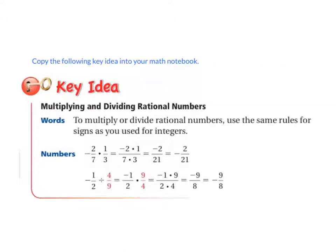Copy the following key idea into your math notebook. Today's key idea is multiplying and dividing rational numbers. To multiply or divide rational numbers, use the same rules for signs as you used for integers. So if you have a negative times a positive, you will end up with a negative number. And that goes for multiplying and dividing. Be sure you copy this example in your notebook as well.